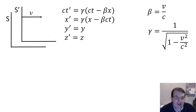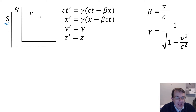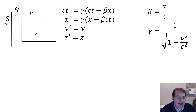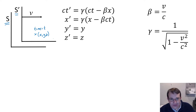Here we have the standard setup for special relativity. We have some inertial frame S, and we have a second inertial frame S-prime that's moving with a velocity v relative to S in the positive x direction. If we have some event that occurs at coordinates x, y, and z in frame S, and it occurs at a time t...